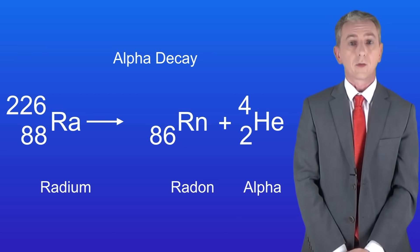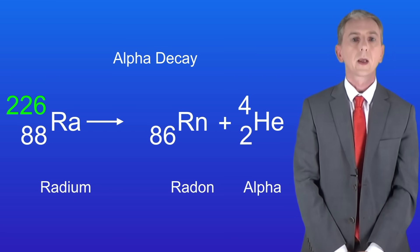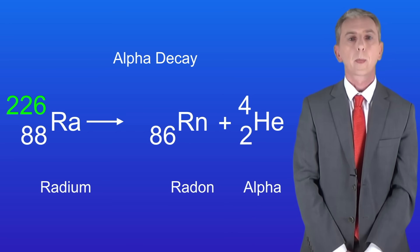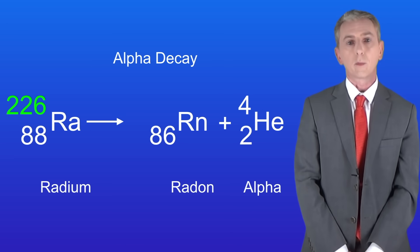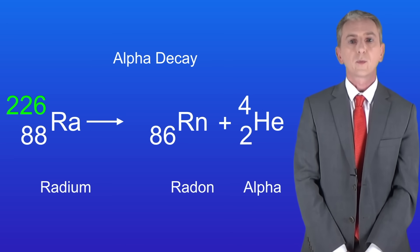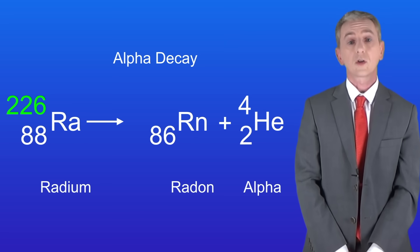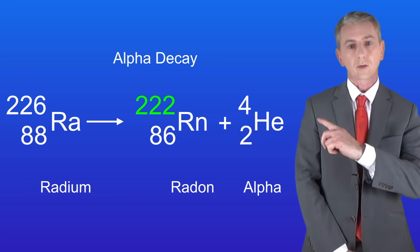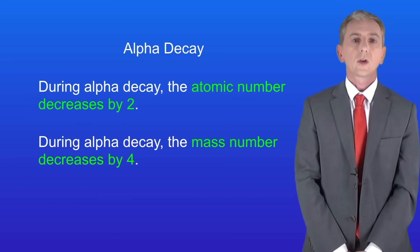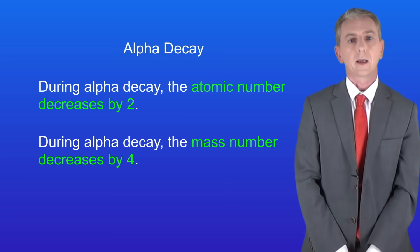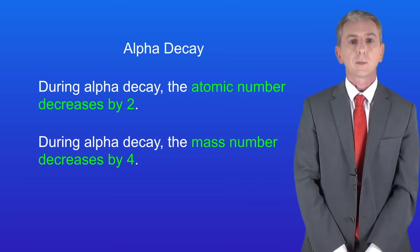The mass number of the radium atom is 226. The alpha particle released has a mass number of 4. This means that the mass number of the radon isotope produced by alpha decay must be 226 minus 4, which gives us 222. So here's the second rule for alpha decay: during alpha decay the mass number decreases by 4.